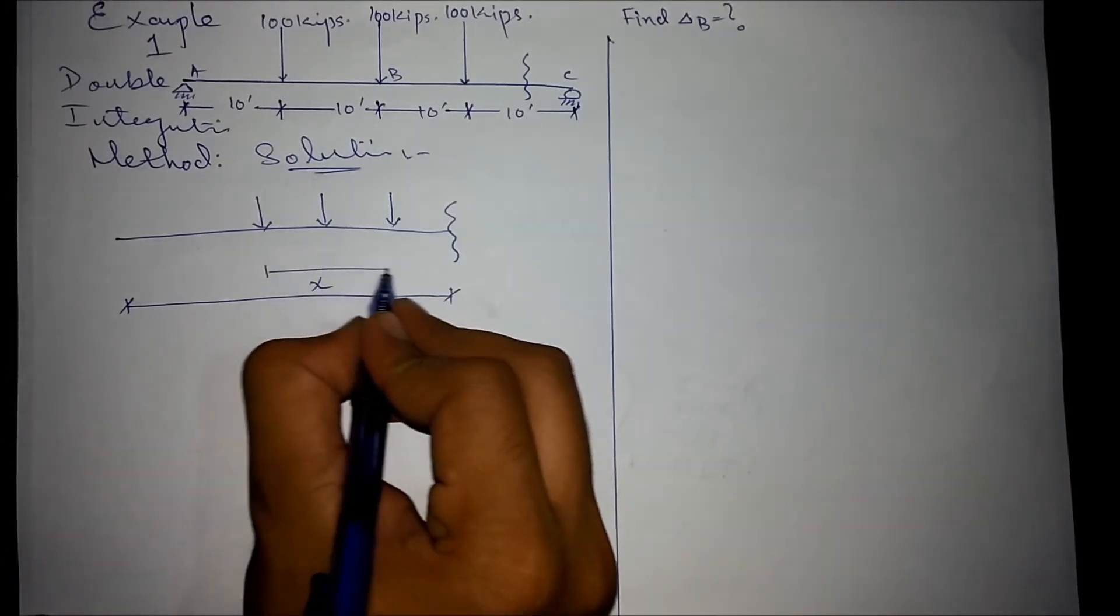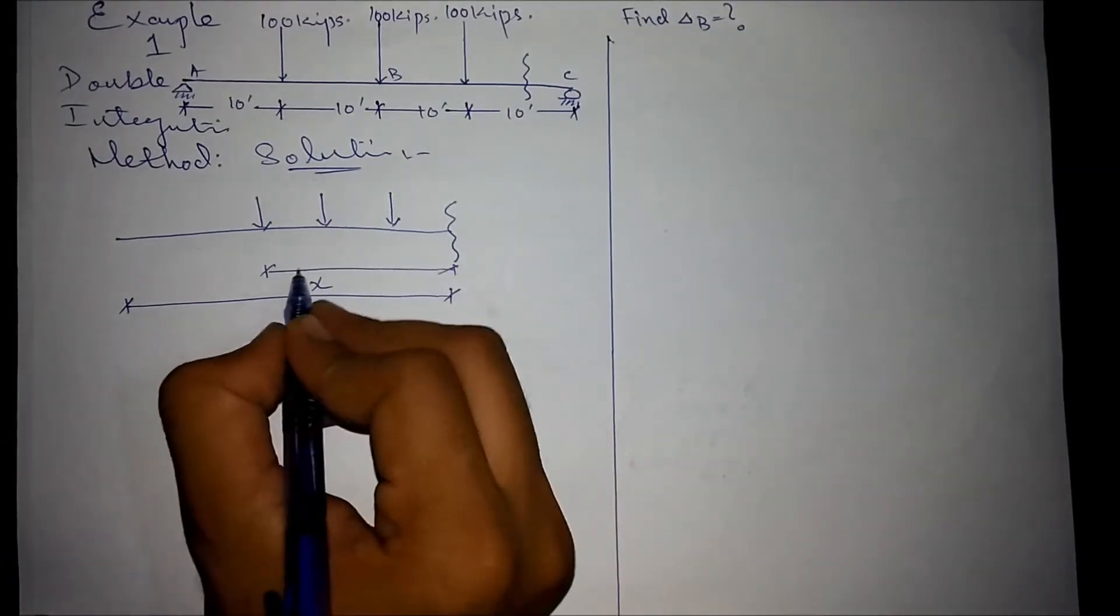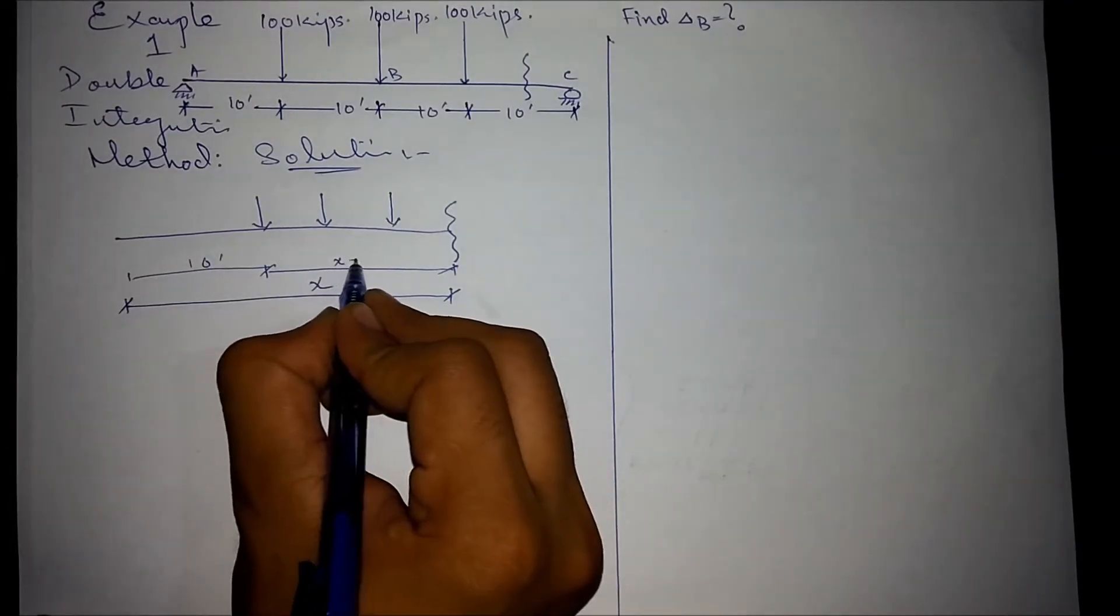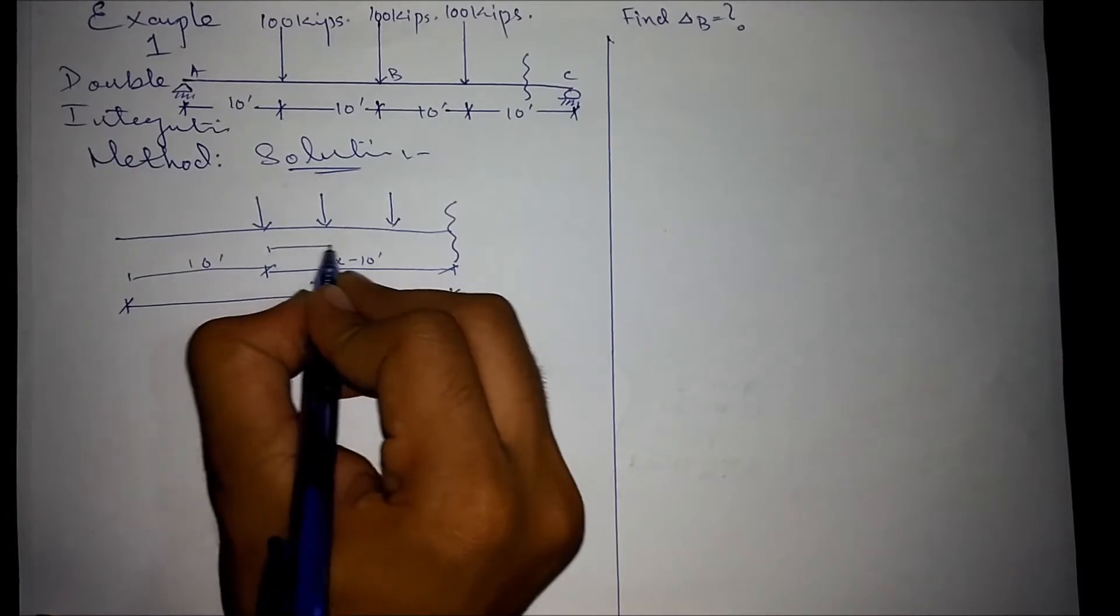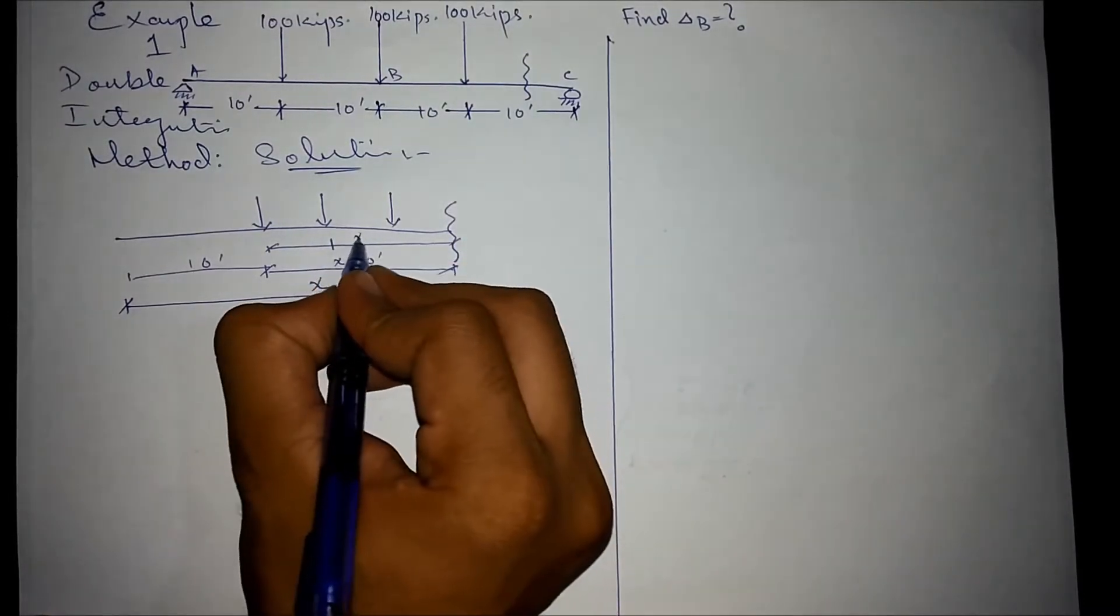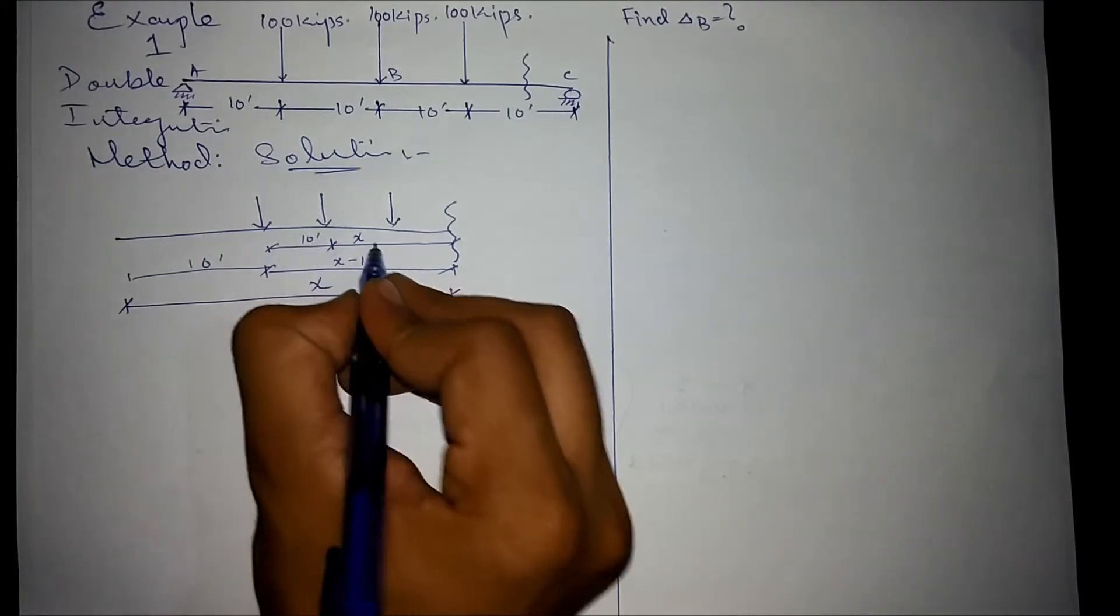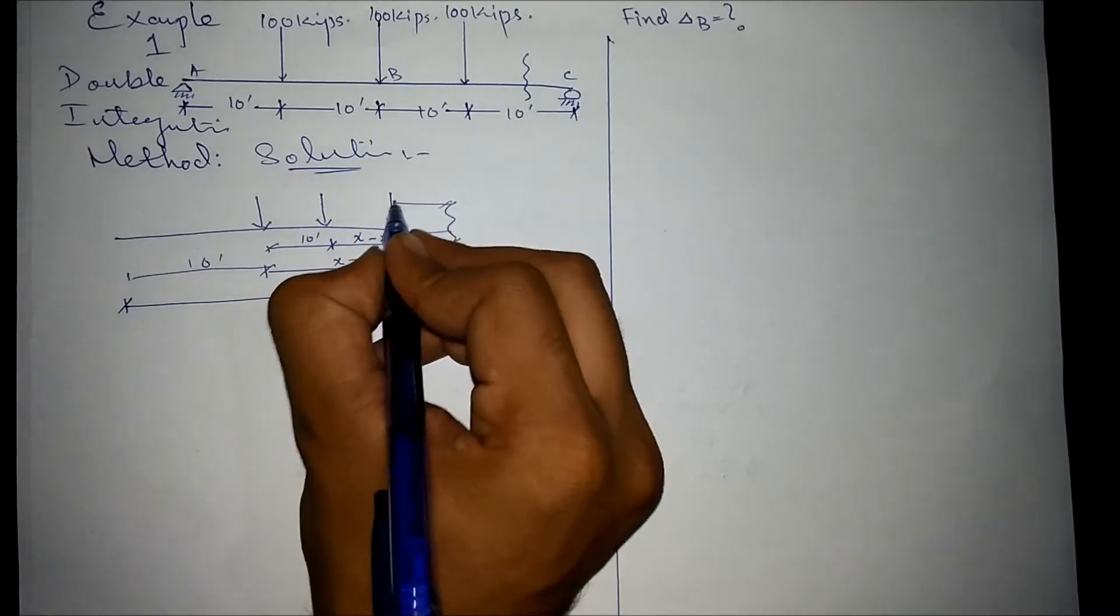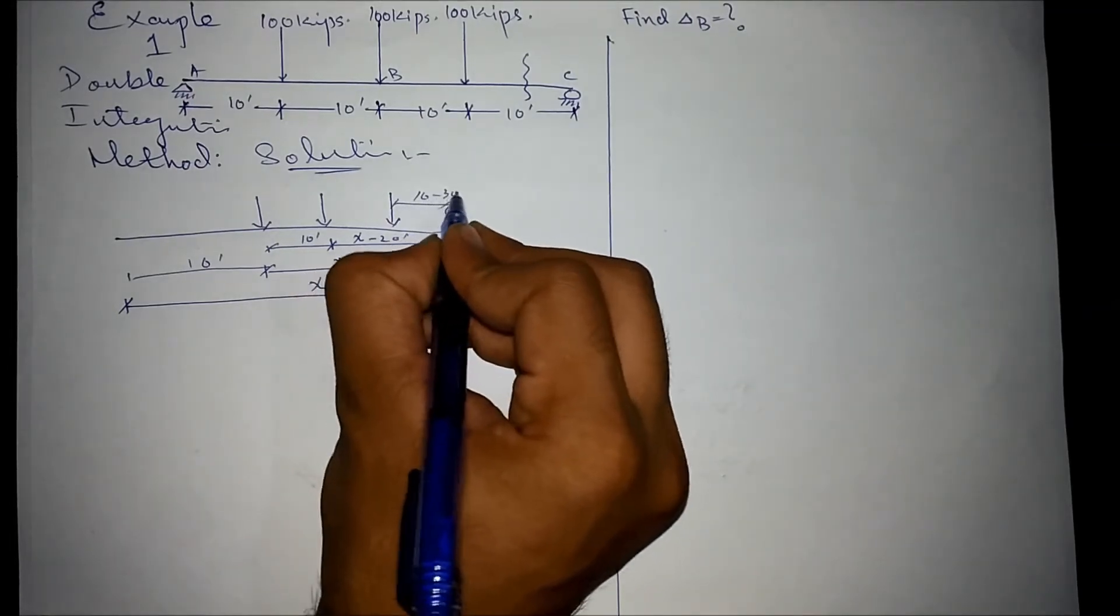This distance would be, since this is 10 feet, this distance is x minus 10 feet. This distance would be x minus 20 feet, and this distance is ultimately x minus 30 feet.